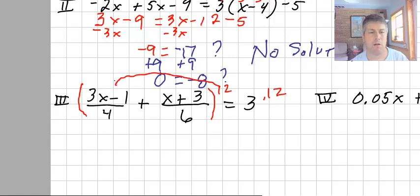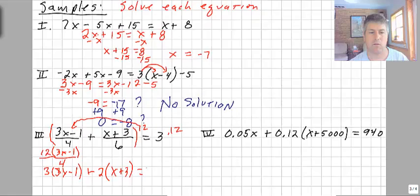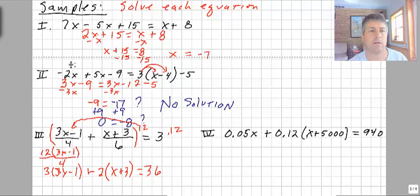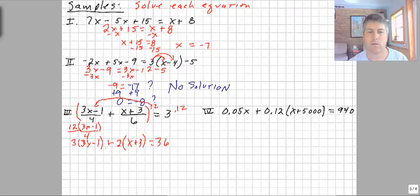So we have to multiply both sides of the equation by 12. When I multiply this by 12, we end up with 12 divided by 4. I have 12 times 3x minus 1 over 4, so 12 over 4, that is 3. So we end up with 3 times 3x minus 1 plus here 12 over 6 is 2, so plus 2 times x plus 3 equals 36. I'm going to give myself a little more space to work with.